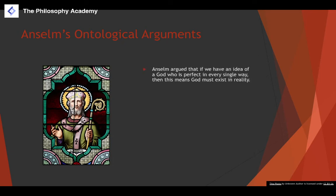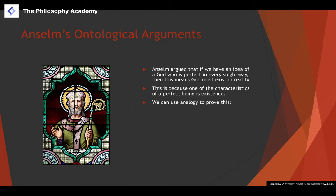Anselm argued that if we have an idea of God who is perfect in every single way — which is how God is characterized in the Judeo-Christian and broader Abrahamic understanding — then God must exist in reality. His reasoning is that one of the characteristics of a perfect being has to be existence itself.